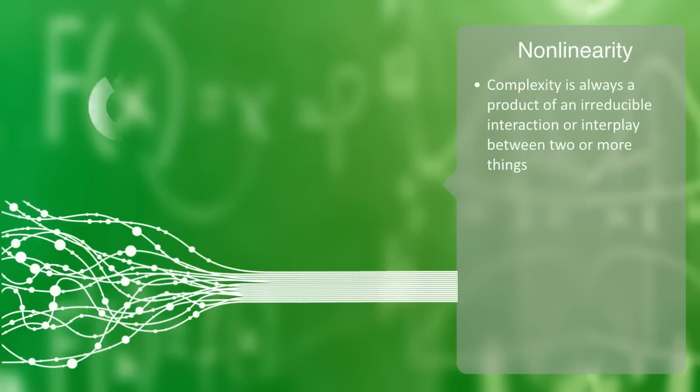Complex systems are, by any definition, non-linear. Complexity is always a product of an irreducible interaction or interplay between two or more things. If we can just do away with this core dynamic and interplay, then we simply have a linear system. If the system is homogeneous and everything can be reduced to one level, then it might be a complicated system, but it is certainly not a complex system.